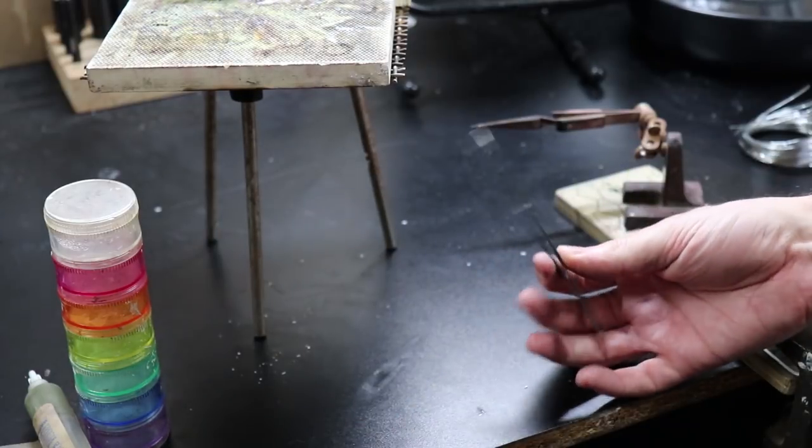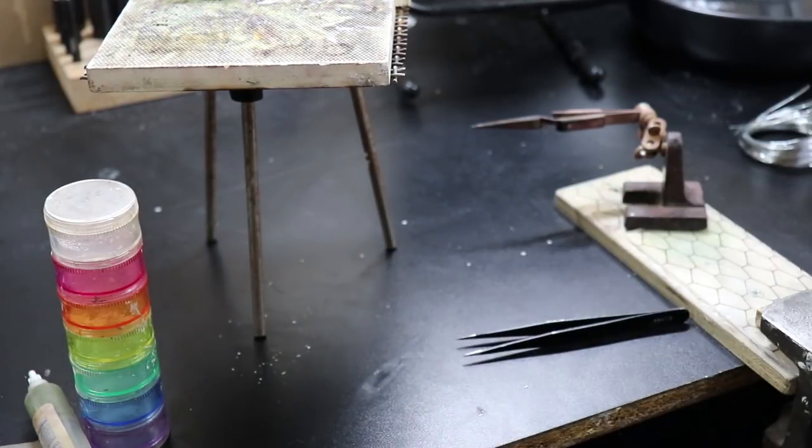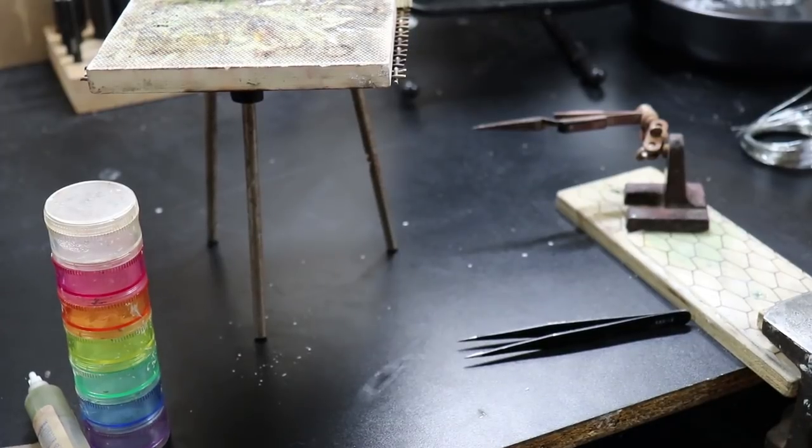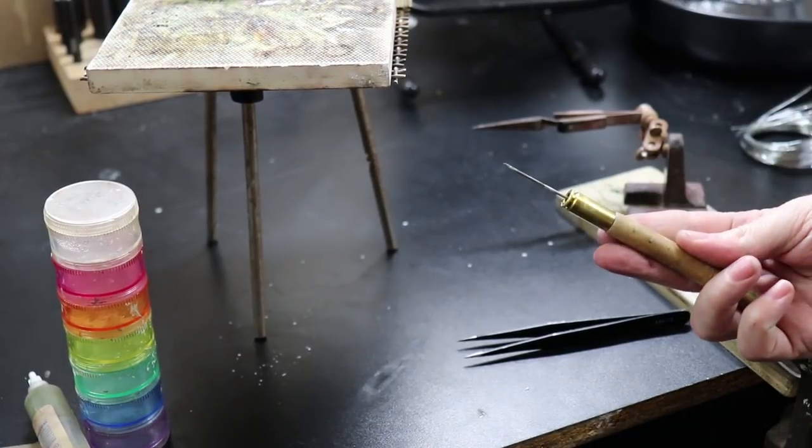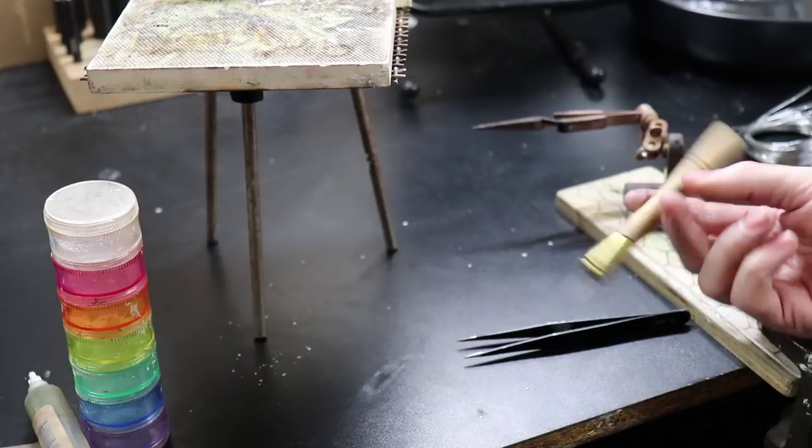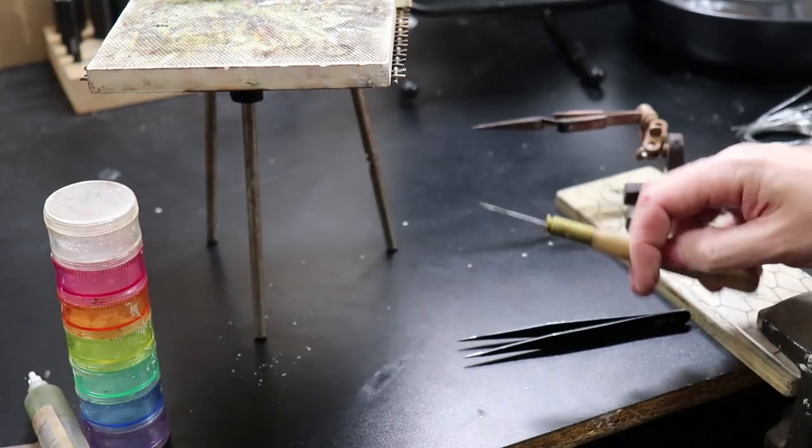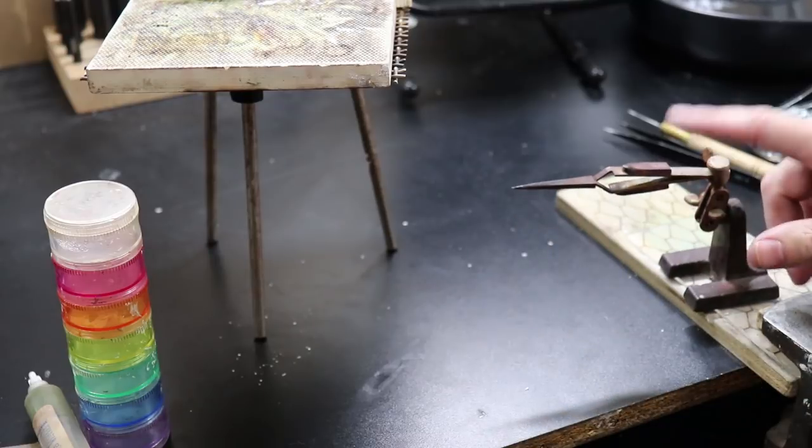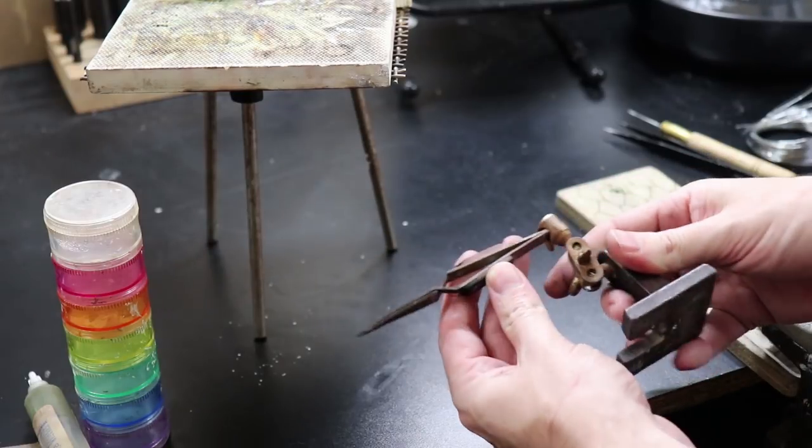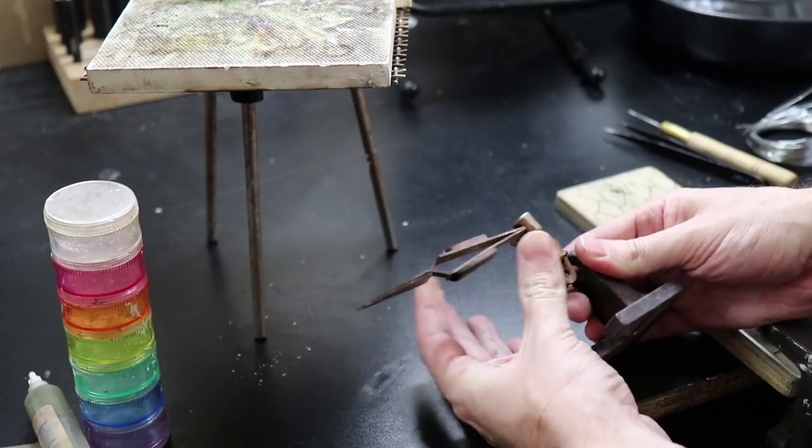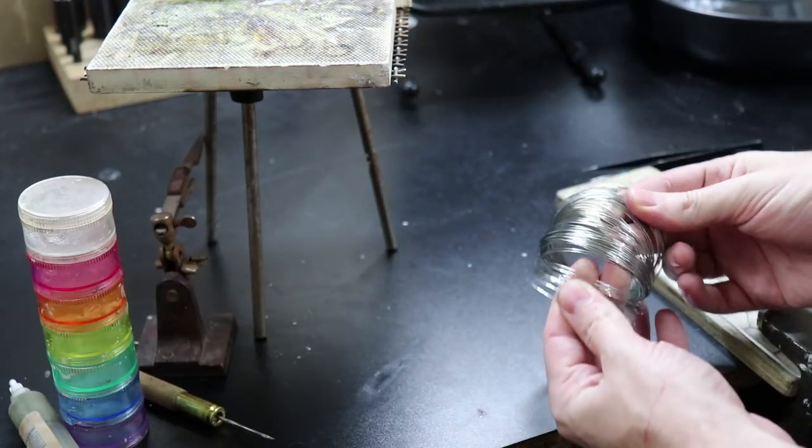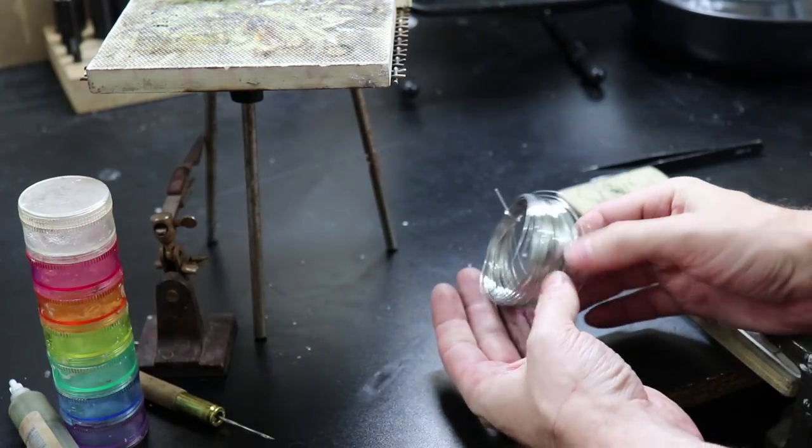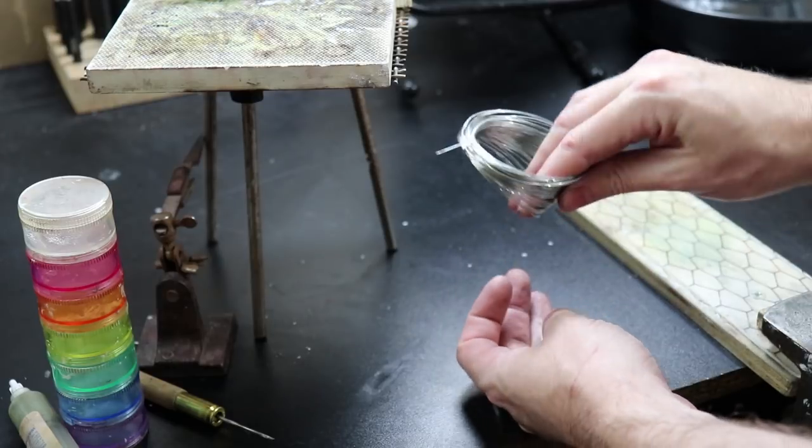Tweezers are an absolute must for me. I use them to align pieces, place solder, and quench the parts when they're extremely hot. A solder pick can also do a lot of the things that tweezers can, besides it can't pick up the piece. Some kind of third hand setup is extremely important when putting different pieces together and holding them in place. You can also use thin steel wire to hold things in place. Just make sure to remove it before pickling the piece.